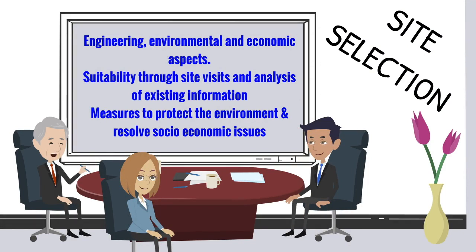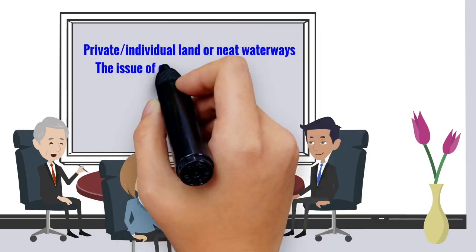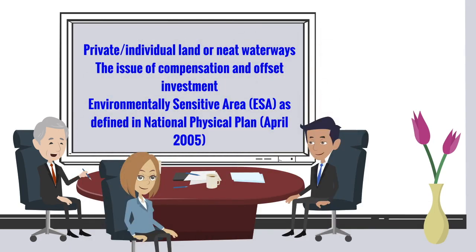These sites are then investigated further for their suitability through site visits and analyses of existing information. During this stage, measures to protect the environment and to resolve socioeconomic issues are also considered. Furthermore, where the project is situated on private or individual land or needs waterways, the issues of compensation and offset investment should be addressed in the EIA. Project proponents are encouraged not to select a site located adjacent to an environmentally sensitive area, ESA, as defined in the National Physical Plan.